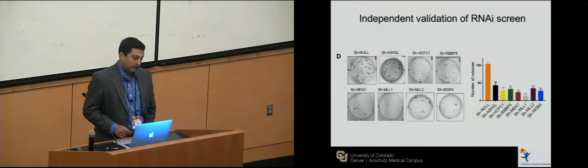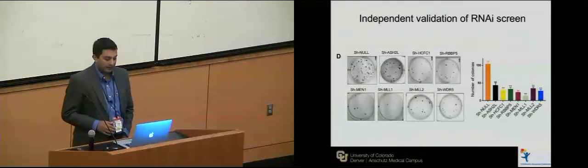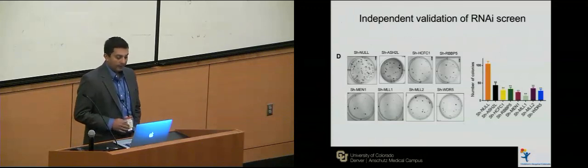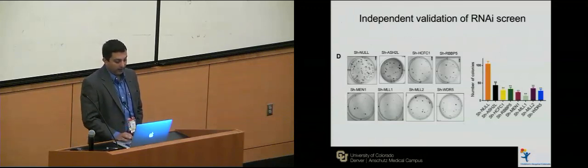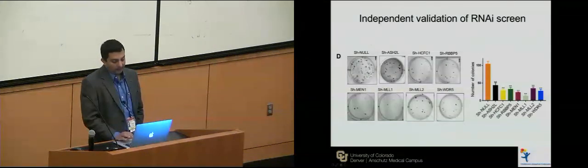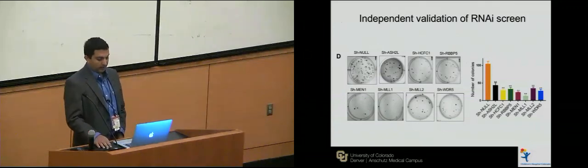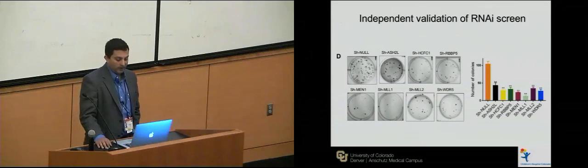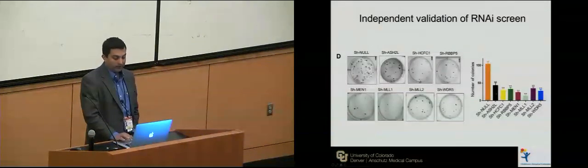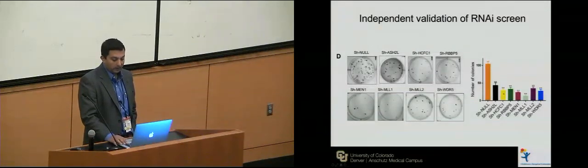We did an independent validation of the RNAi screen using independent shRNAs. Compared to the null shRNA, all of the various components, when knocked down, decrease colony formation significantly. What we found in the shRNA pool is consistent with what we found independently — you can see the quantification of colony numbers for all the various components of the COMPASS-like complex.